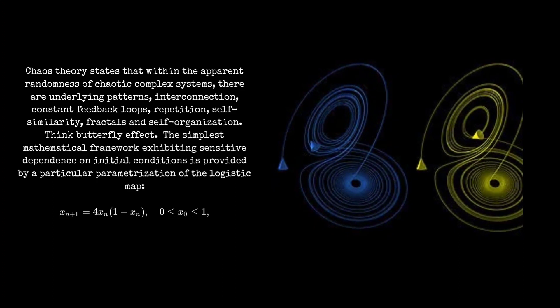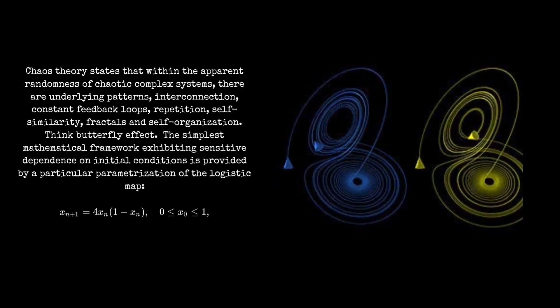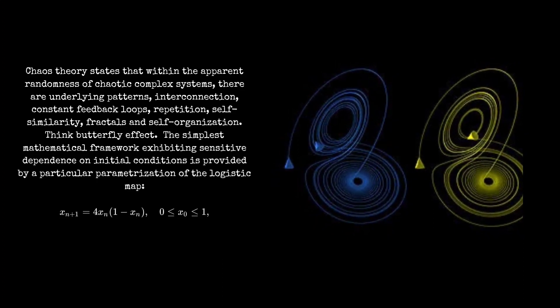Chaos theory states that within the apparent randomness of chaotic complex systems there are underlying patterns, interconnection, constant feedback loops, repetition, self-similarity, fractals, and self-organization.